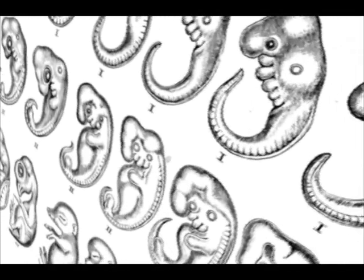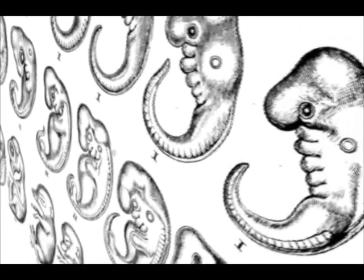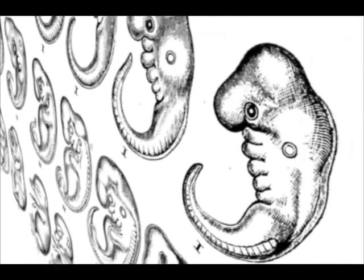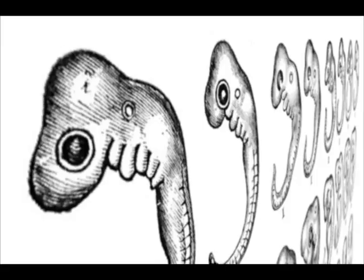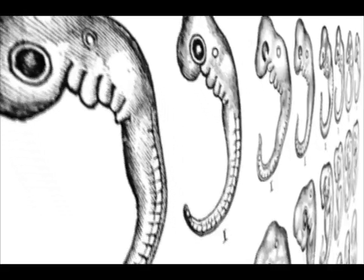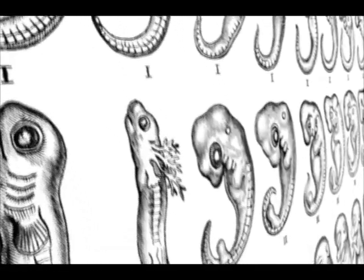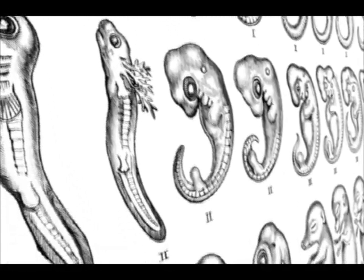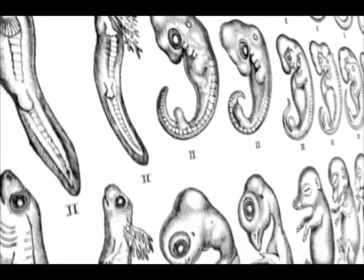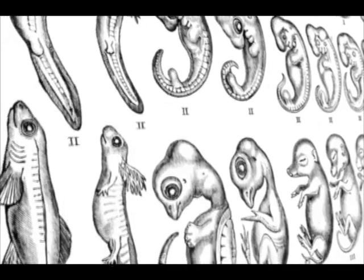Their early similarities were meant to show that they came from a common ancestor, and differences arose only later. The problem is that he faked his drawings. The early vertebrate embryos don't really look that similar at all.